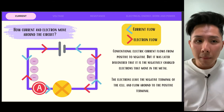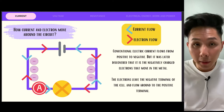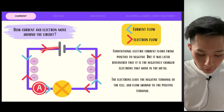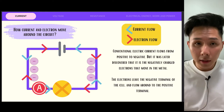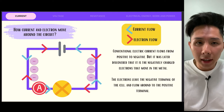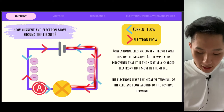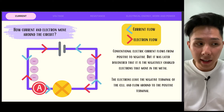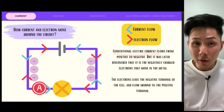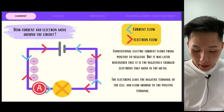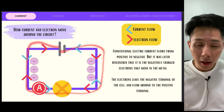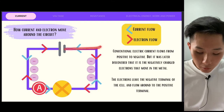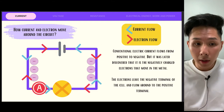Here I want to show you how the flow of current works. Initially, scientists thought that current flows from the positive terminal to the negative terminal. But it was later discovered that it is the electrons that move, and the electrons move from the negative terminal to the positive terminal. So you have to understand two things: conventional current — you will see this word very often — is the original way scientists thought the current flows, from positive to negative. Whereas electrons move from negative to positive, and it is actually the flow of electrons that causes current.